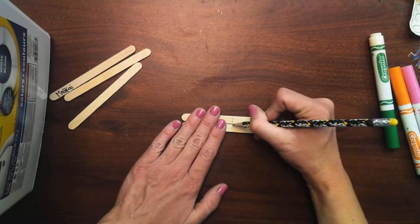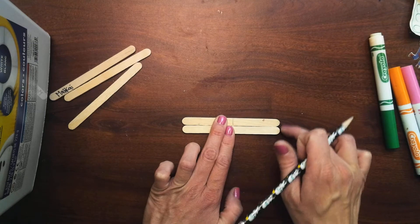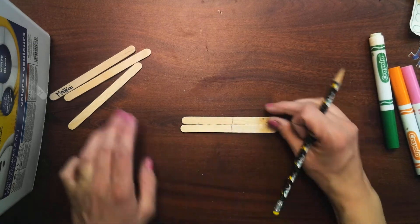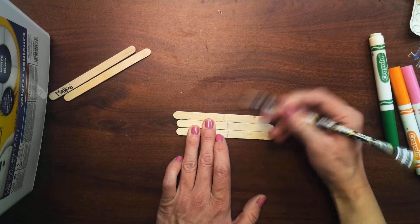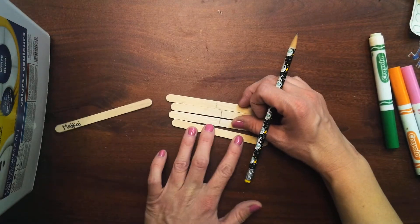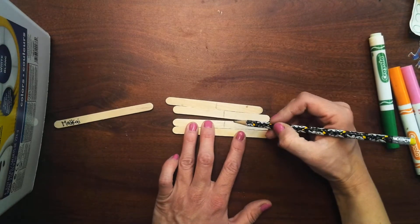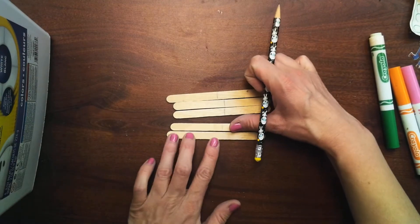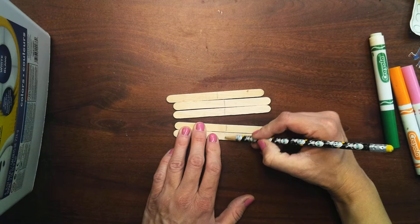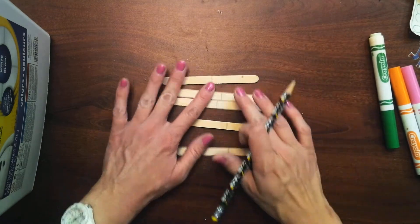once you have it you can line up your popsicle sticks so that they're the same and just draw it so that you don't have to keep guessing every time. So I'm gonna do this for all of my popsicle sticks. Remember I'm gonna turn that one over because it has a name on it. And so this is basically half.